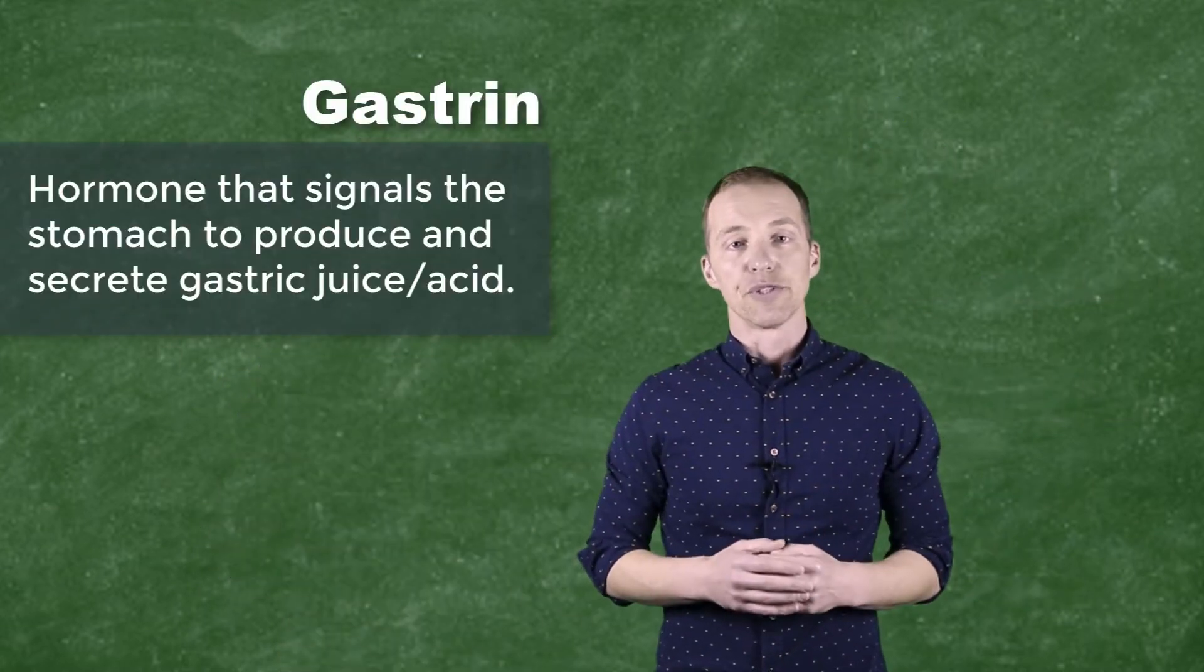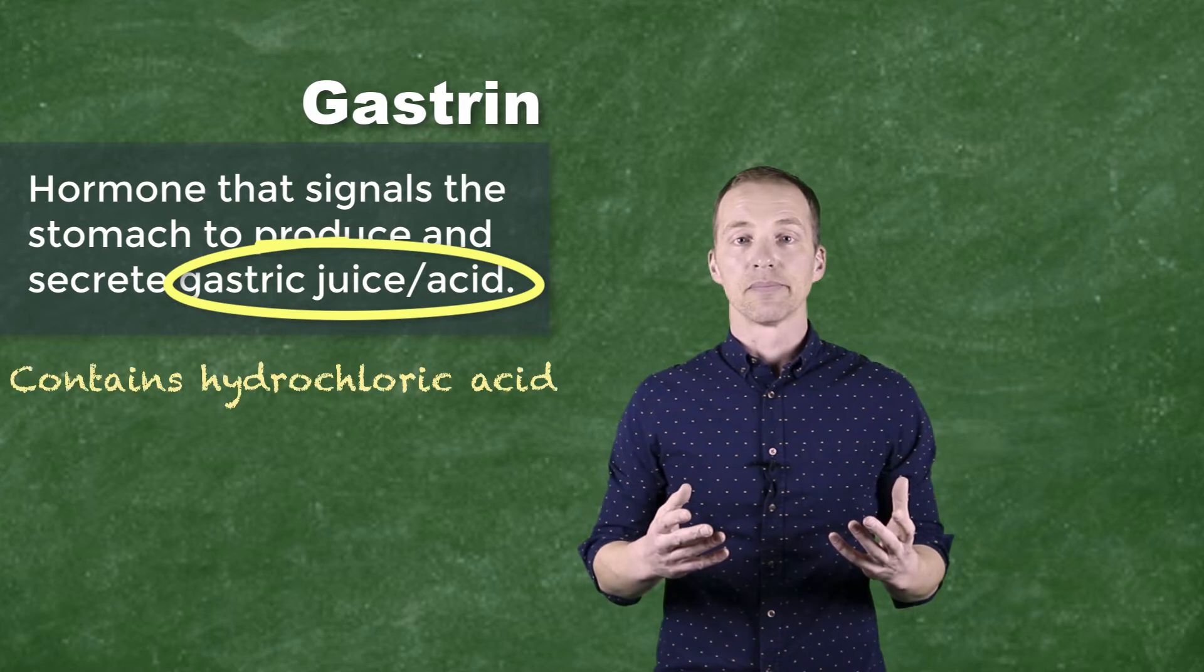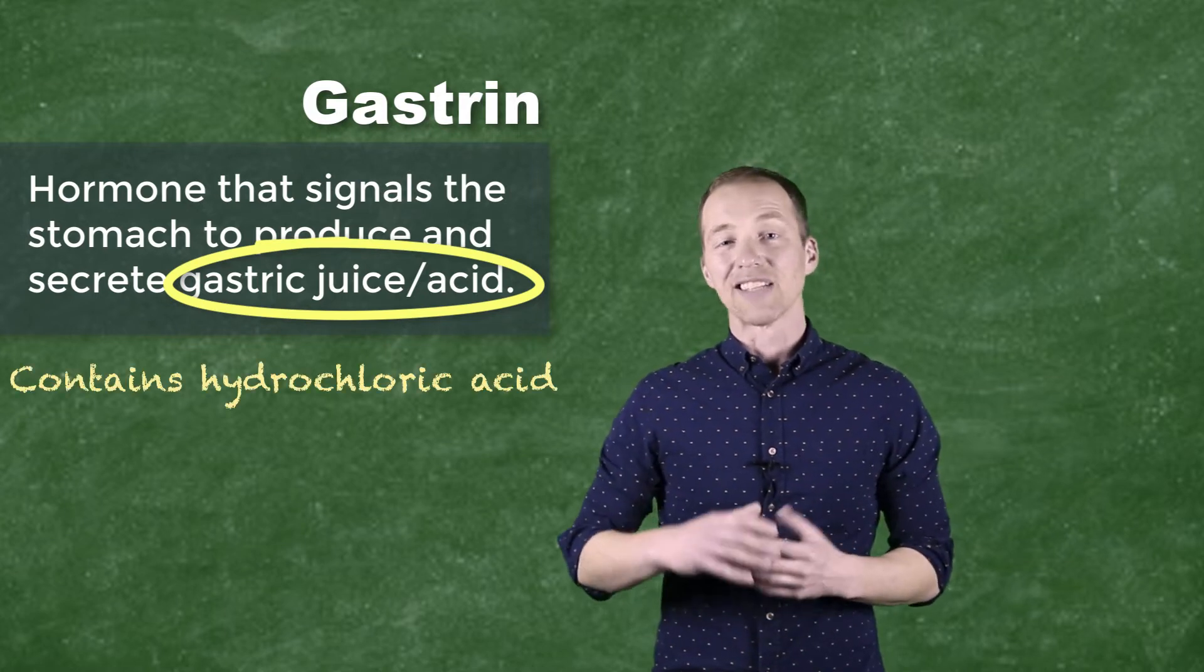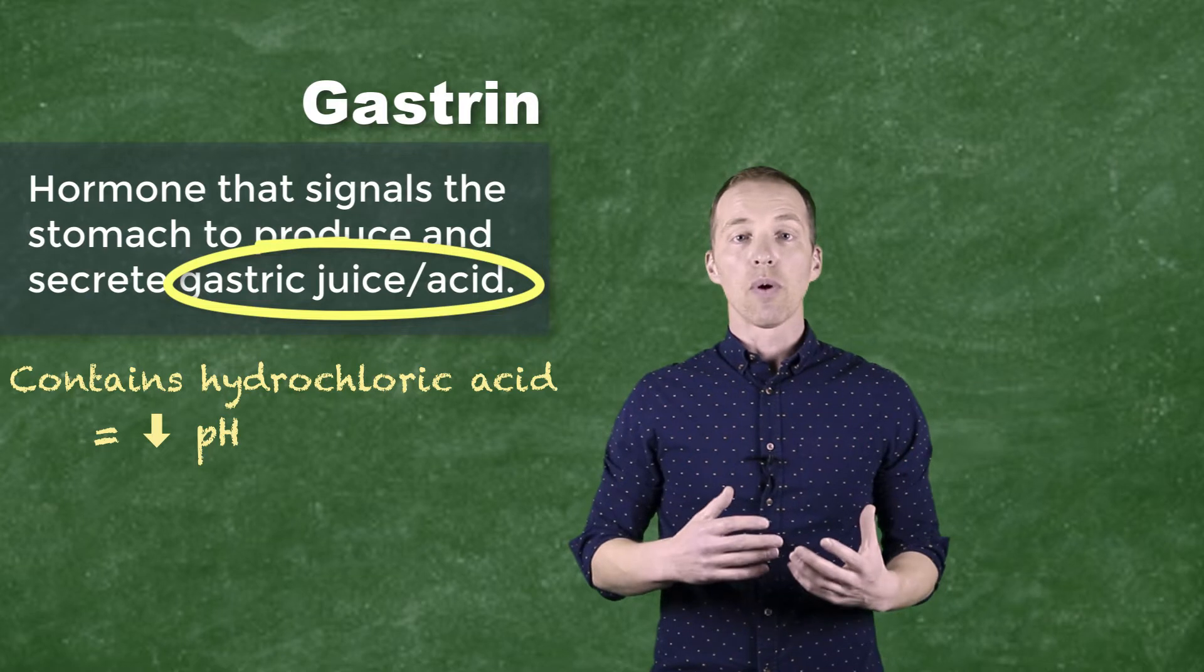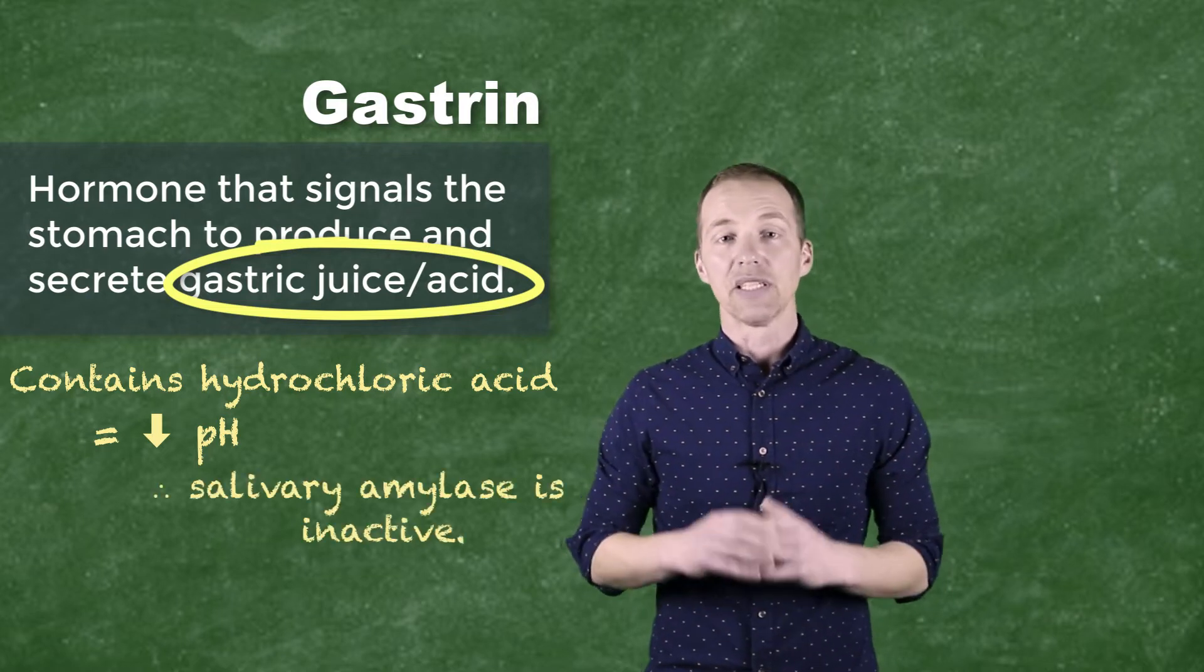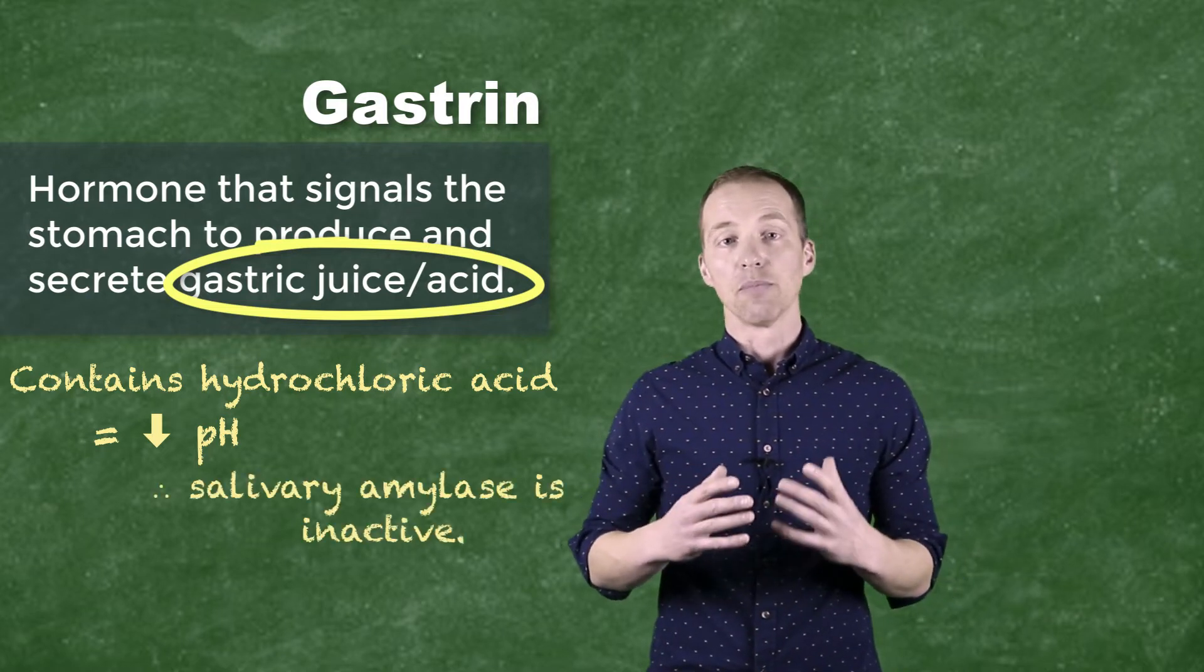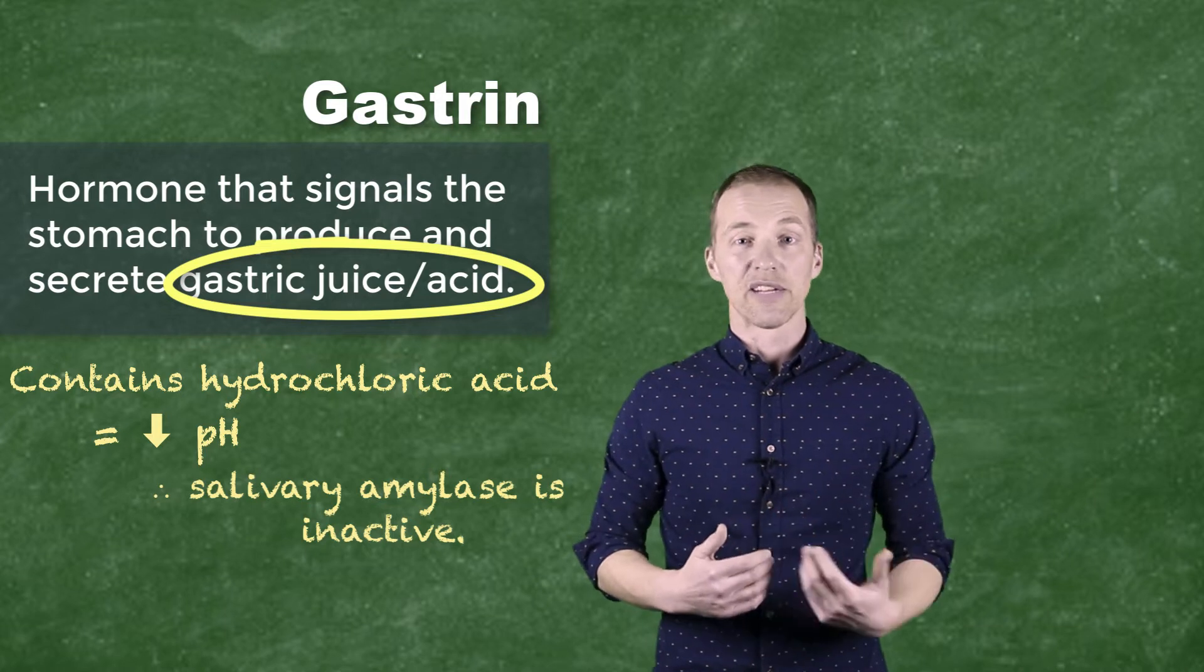Now one of the components of gastric juice is hydrochloric acid. And the presence of that hydrochloric acid lowers the pH of the stomach. Now the lower pH or more acidic environment actually deactivates the amylase that comes from the mouth with the bolus of food as it enters into the stomach.